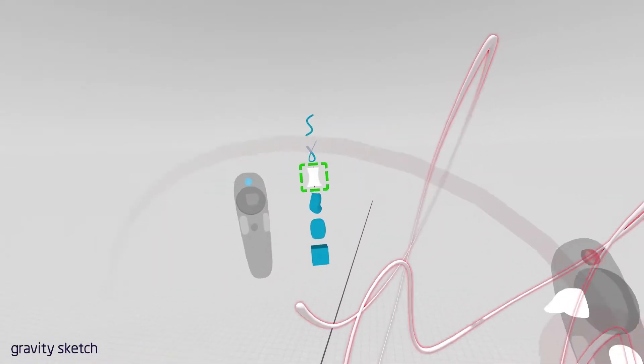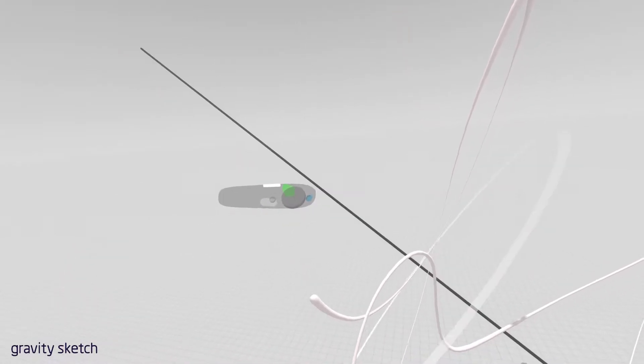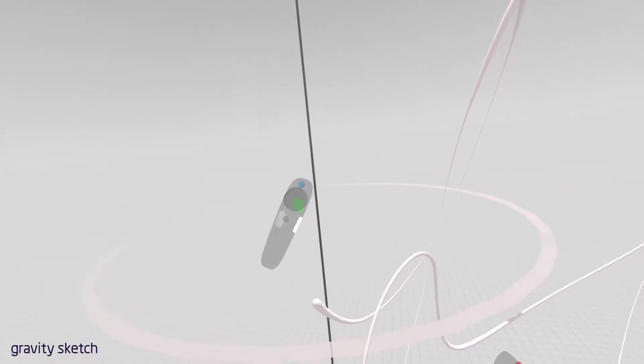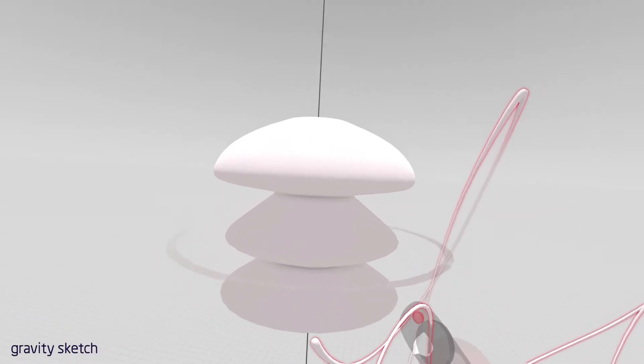This is the revolve tool. It's a two-handed gesture, so you pull the left trigger first. If you half pull, you can snap, and that sets your axis. Then with the drawing hand, you can sketch revolve around that axis.